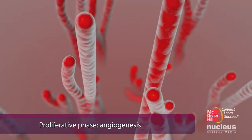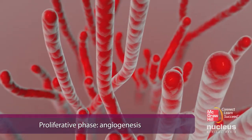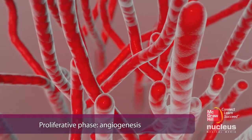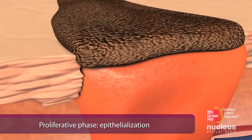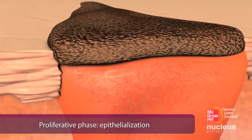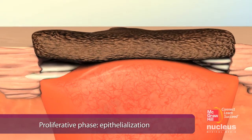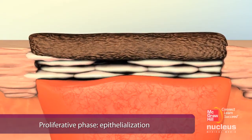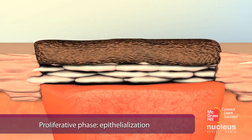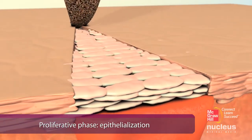Angiogenesis, or the growth of new blood vessels, begins almost simultaneously and supplies oxygen to the repairing cells. Epithelialization is the restoration of the protective skin barrier. Epithelial cells migrate from the margins of the wound, protected by the scab, until they meet. Eventually, the scab falls off.